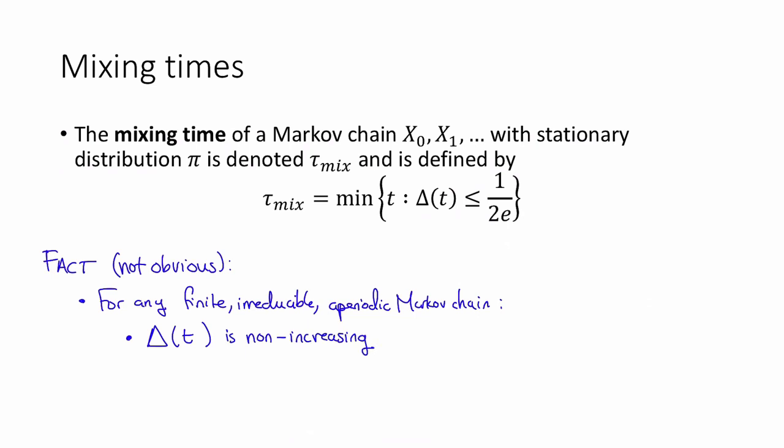That is, as t gets bigger, we're not going to get any further from the stationary distribution. And also, Δ(c·τ_mix) for some constant c is less than or equal to e^(-c).